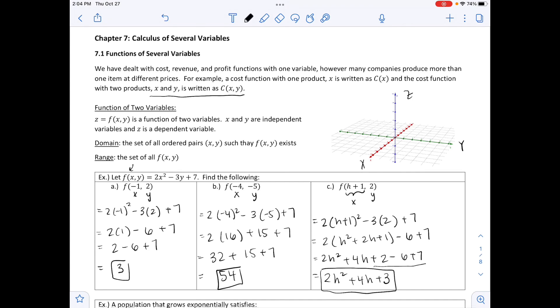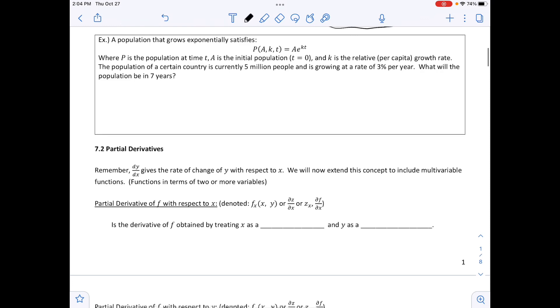So right below that, we have another example. This example says that a population that grows exponentially satisfies P of A comma K comma T, which is equal to A to the power of K times T, where P is the population at time T. A is going to be the initial population when time T is 0. And K is the relative per capita growth rate. The population of a certain country is currently 5 million people and is growing at a rate of 3% per year. What will the population be in 7 years?